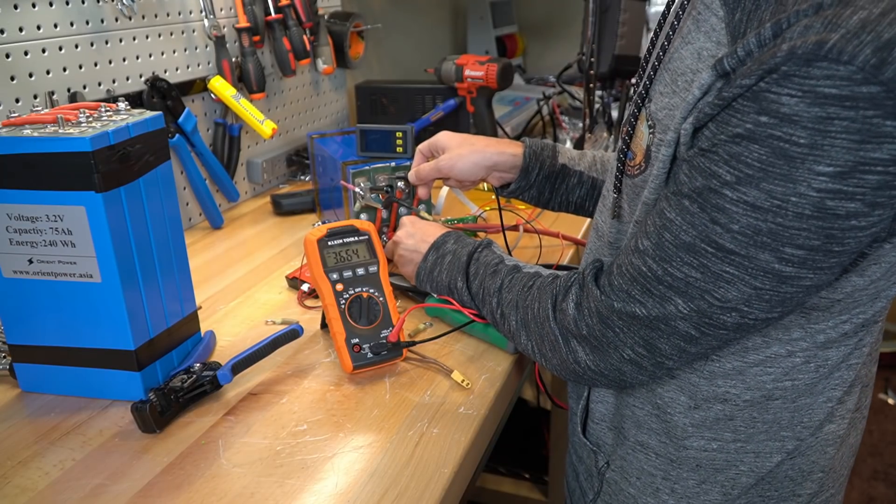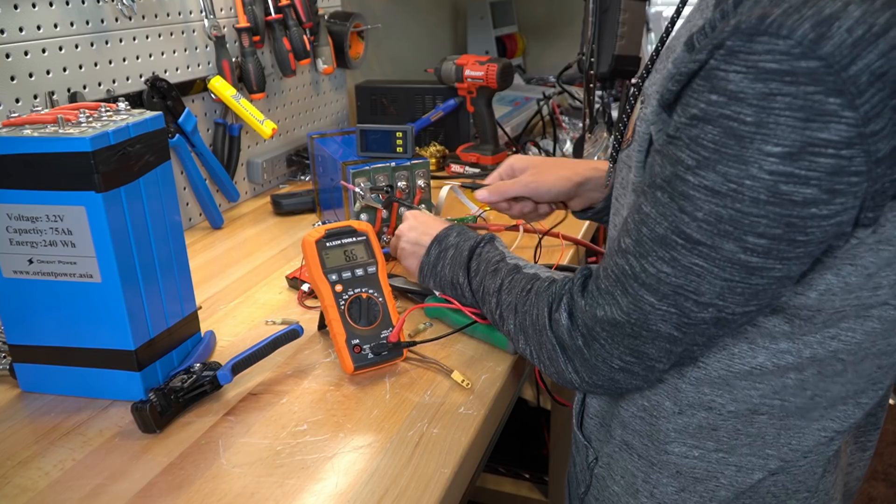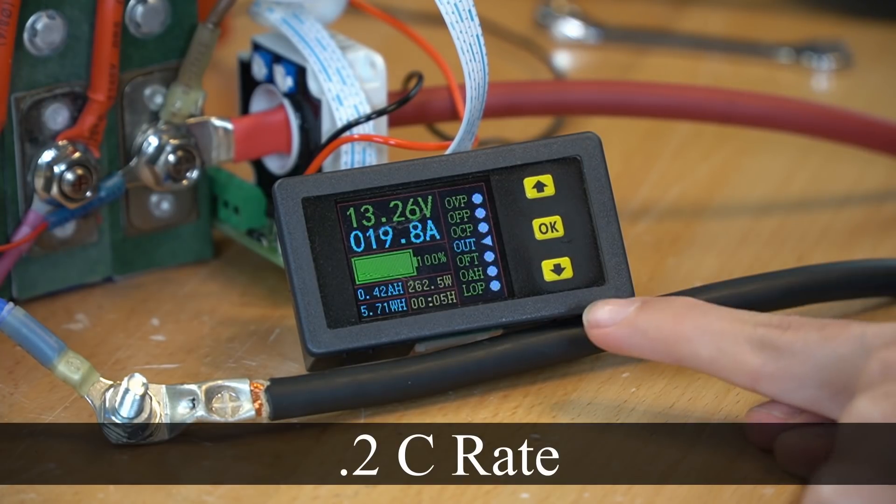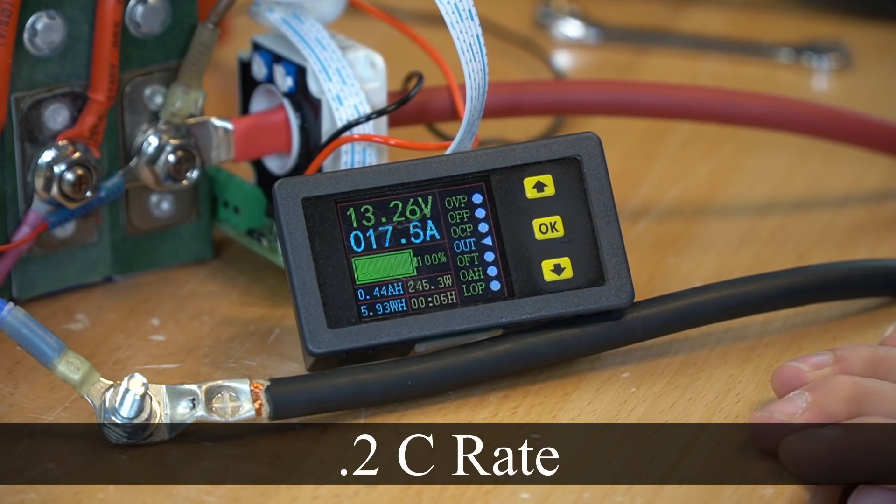And now the battery charger is connected and we're going to wait till this is filled up. So this battery is fully charged and the cell voltages are at 3.6. Now we're doing the capacity test and we're doing it at a 0.2C rate. So we have an accurate assessment of the capacity.